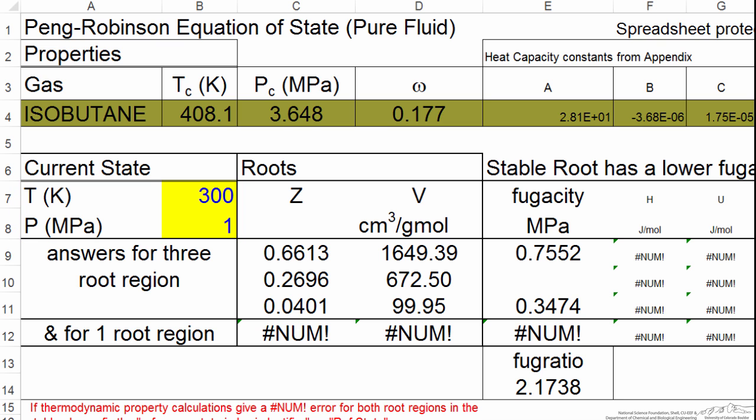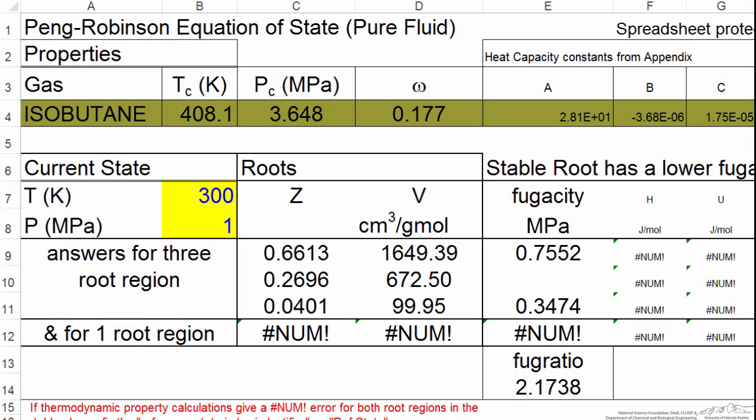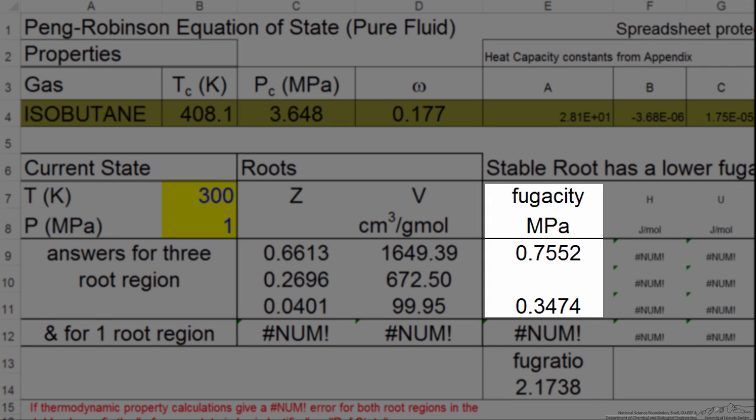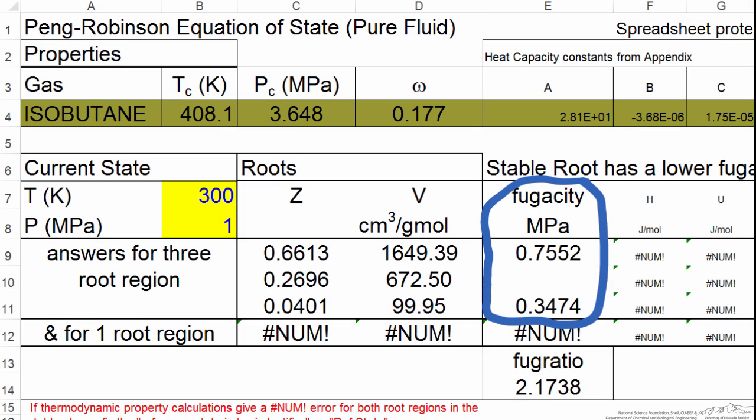And then if we look at the spreadsheet under volume, the larger volume is the vapor phase and the smaller volume is the liquid phase. The part we're interested in is the fugacity. So the part we want to compare is fugacity over here. Fugacity for the liquid, fugacity of the vapor, not the same.